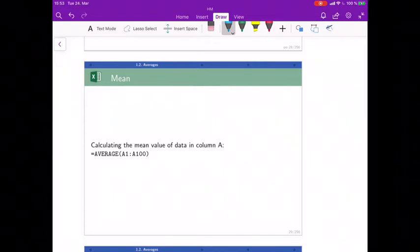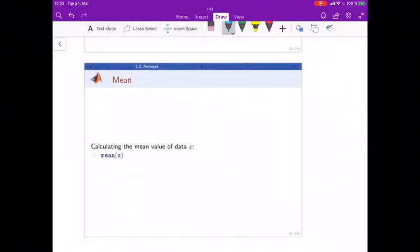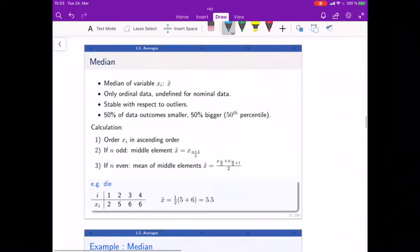median. It's an interesting one and it's quite often used because it's a bit more stable with respect to outliers. Basically, it gives back the outcome that has 50% of small outcomes and 50% of large outcomes either side. What you do: you order all your data in ascending order and then take the middle element. If there's an even number, then you take the mean value of the two middle elements.